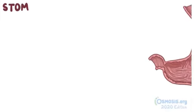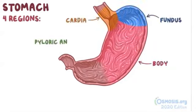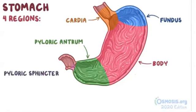The stomach has four regions: the cardia, the fundus, the body, and the pyloric antrum. There's also a pyloric sphincter, or valve, at the end of the stomach, which closes while eating, keeping food inside the stomach to digest.